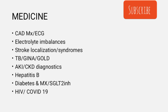Then TB — focusing more on newer drugs from the pharmacology side — and the GINA and GOLD guidelines, which are the guidelines for asthma and COPD respectively.